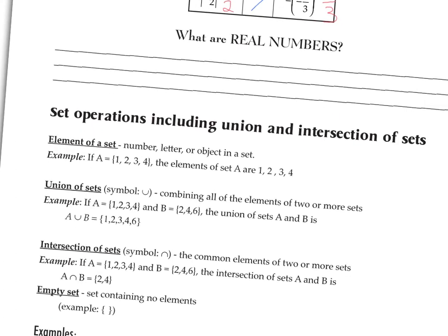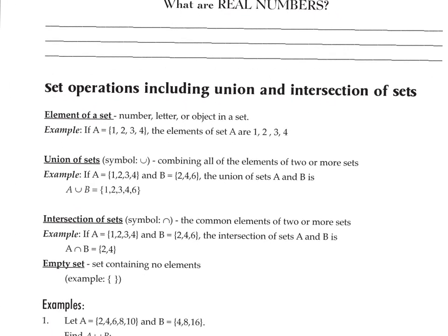Now, union and intersection of sets. The elements of a set are the numbers, letters, or objects in it, enclosed in braces. For example, if set A equals {1, 2, 3, 4}, those are the elements. These are just example sets made up by the author for illustration purposes.